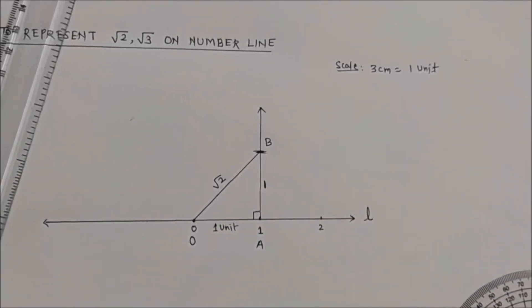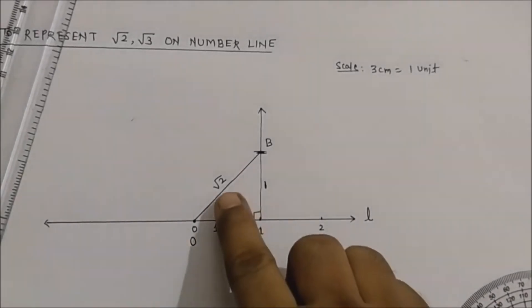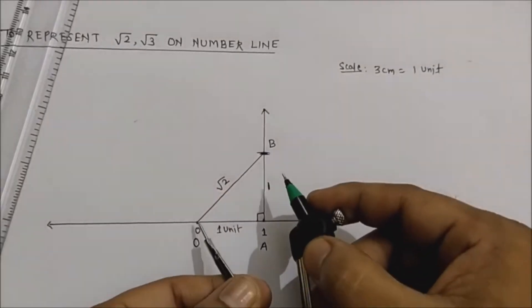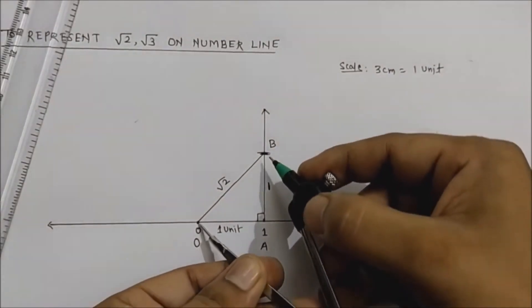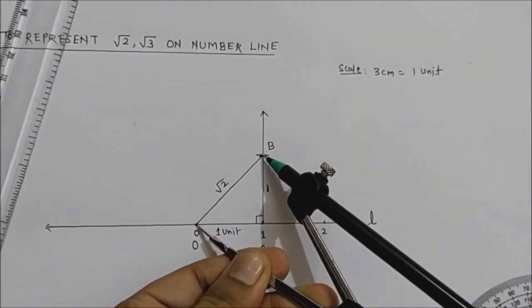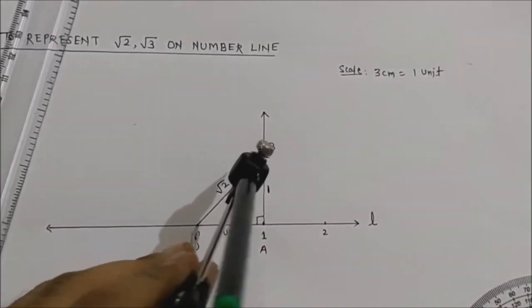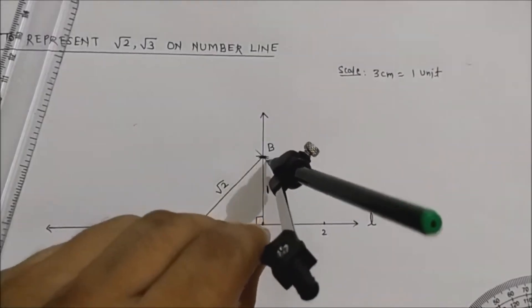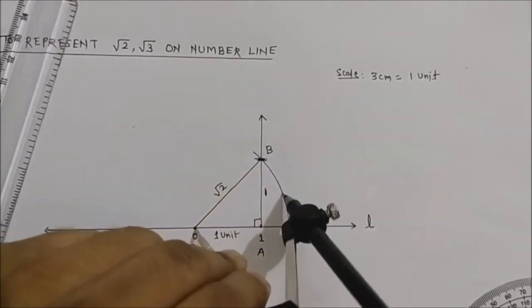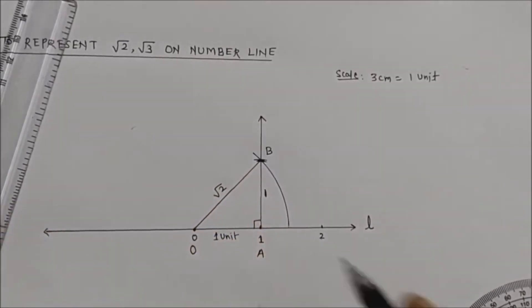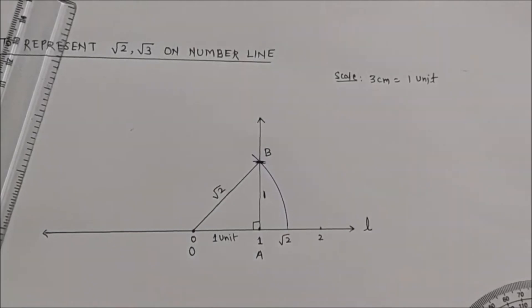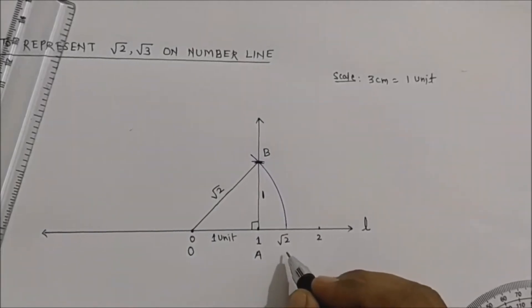After this, to represent root 2 on this line, keep the compass on point O and take the distance O to B. From point O, draw an arc on the line. This gives you root 2. Name it point P.